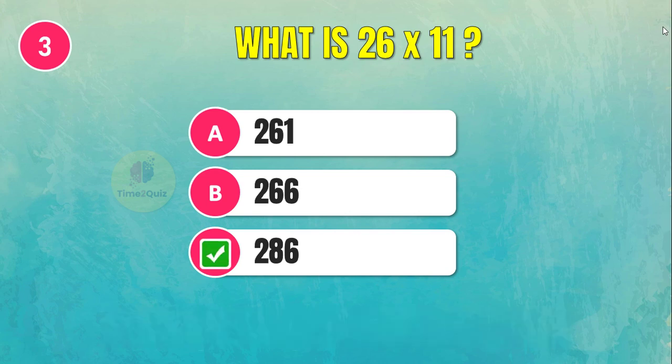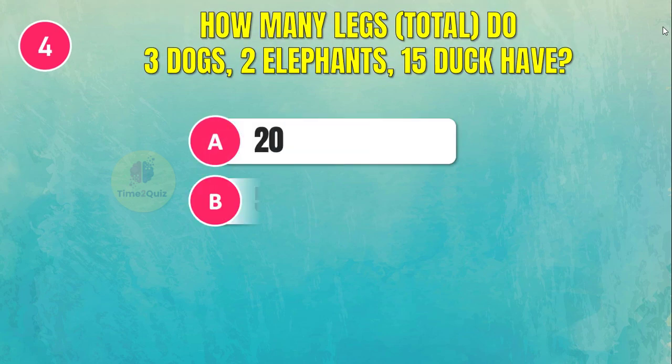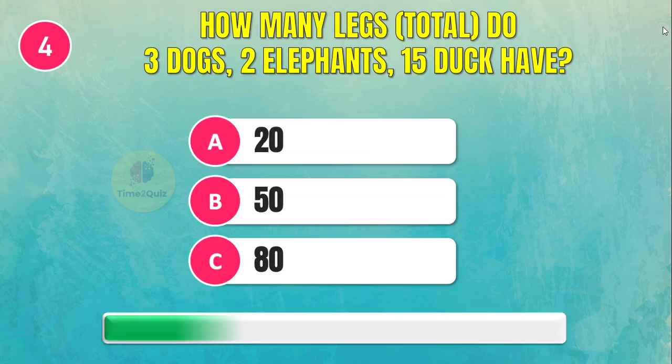286. How many legs total do three dogs, two elephants, and 15 ducks have?